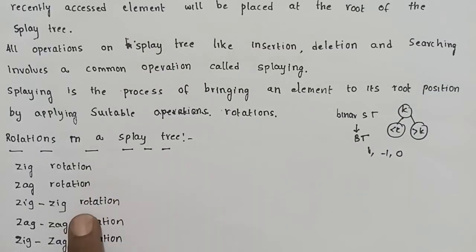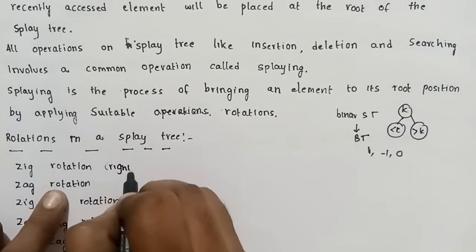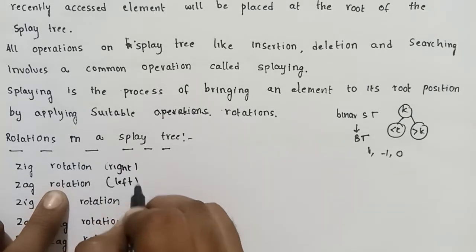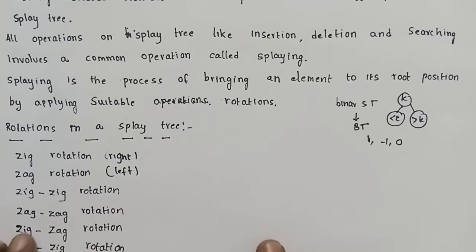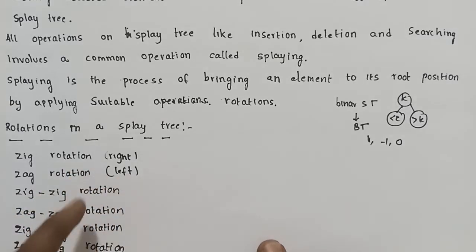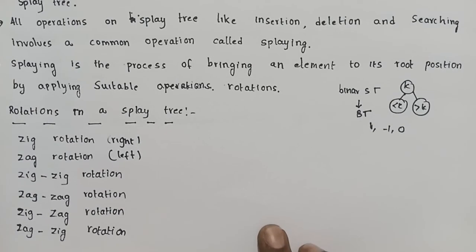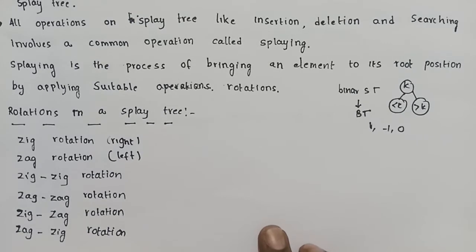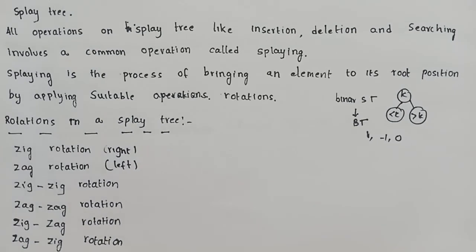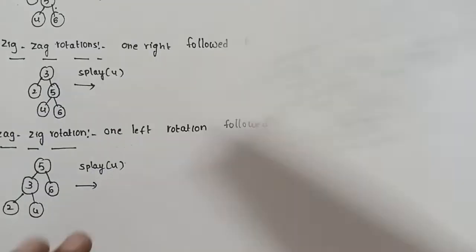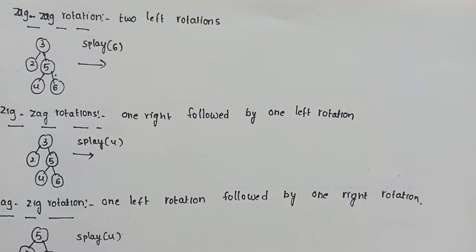Now we discuss the rotations: Zig rotation, Zag rotation, and Zig-Zag rotation. Zig is a right rotation, Zag is a left rotation, Zig-Zig is right-right, Zag-Zag is left-left. We will discuss the first rotation with an example.